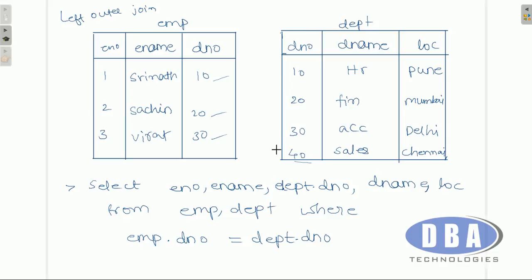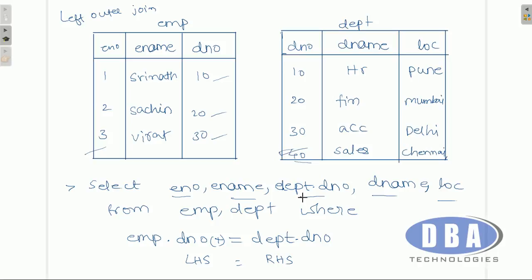So we need to combine both tables and also get the extra information present in the department table. The department table has extra information; the employee table has less information because department 40 is not present in the employee table. So we give a plus symbol on the side of the table that has less information — that is, on the employee table's d_number in the WHERE clause: employee.d_number(+) = dept.d_number. This is called left outer join because the plus symbol is on the left-hand side. The output will include department 40 as well. We take d_number from the department table so it shows the 40th department values too.